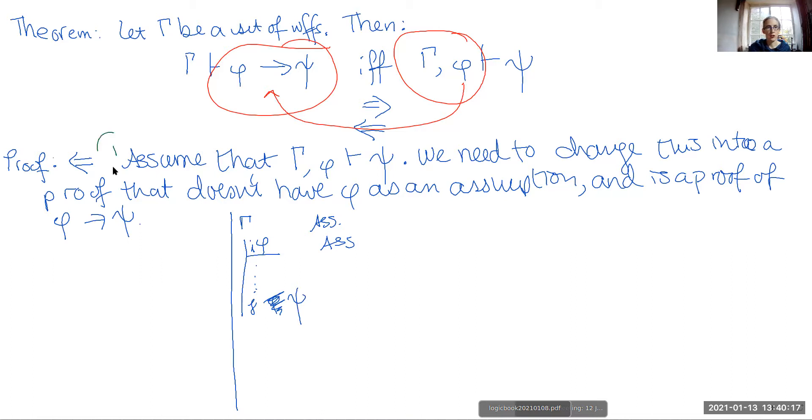Here again, we will call this assumption, this assumption that we have this proof here. Then what we are able to do at this line of the proof is to just use conditional introduction, citing the sub proof from lines i to j, and there you have it.